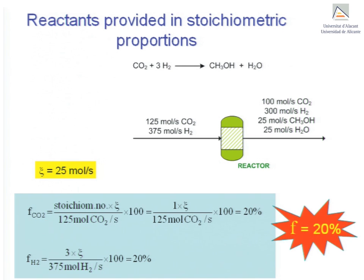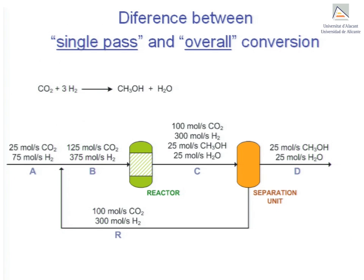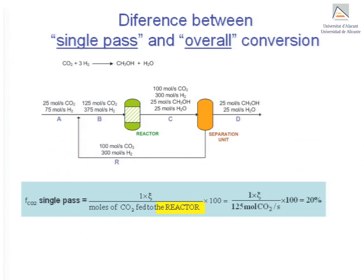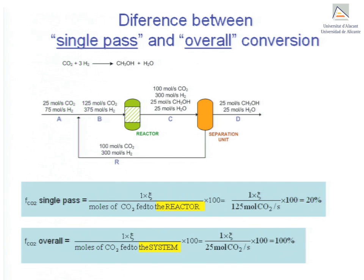The conversion in this example is simply 20%. We now turn to the difference between single-pass and overall conversion. This distinction is necessary when a portion of the exit stream of the reactor is recycled back to the inlet. In this case, the fresh feed to the process, stream A, enters in stoichiometric proportion. The definition of conversion is the same — moles reacted over moles fed — but changes slightly in the denominator: for single-pass conversion, we use moles fed into the reactor; for overall conversion, we use moles fed into the system.